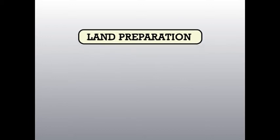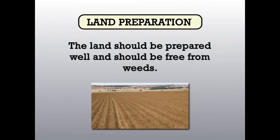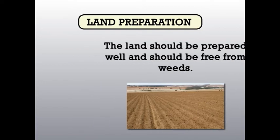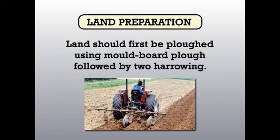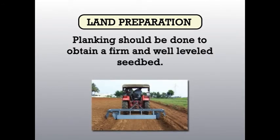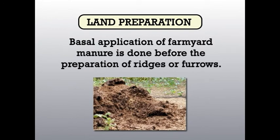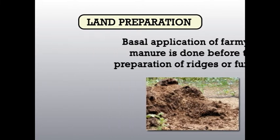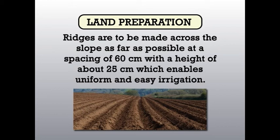We will see how land preparation should be done. The land should be prepared well and should be free from weeds. The land should first be ploughed using a moldboard plough followed by two harrowings. Planking should be done to obtain a firm and well-leveled seedbed. Basal application of farm yard manure is done before the preparation of ridges or furrows. Ridges are to be made across the slope as far as possible at a spacing of 60 cm with a height of about 25 cm, which enables uniform and easy irrigation.